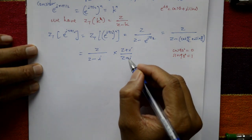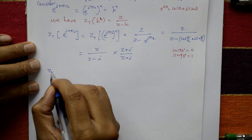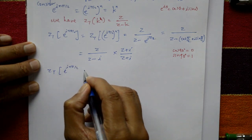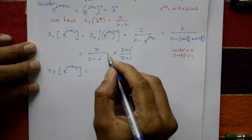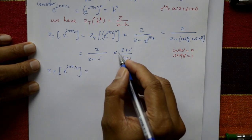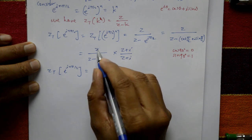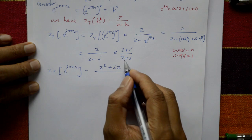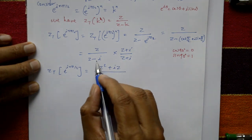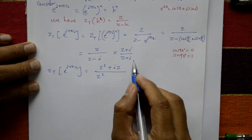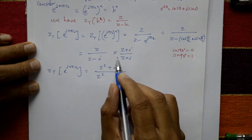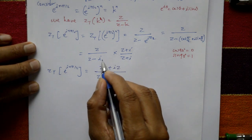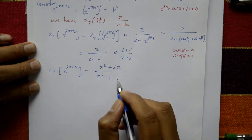Multiply numerator and denominator by the conjugate (Z + i). The numerator becomes Z(Z + i) = Z² + iZ. The denominator: (Z − i)(Z + i) = Z² − i² = Z² + 1, since i² = −1.